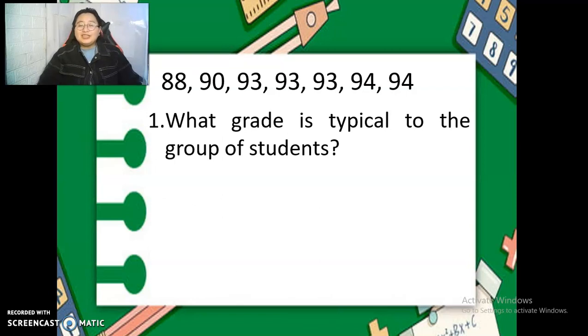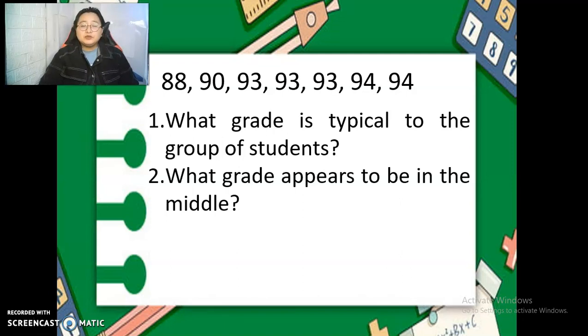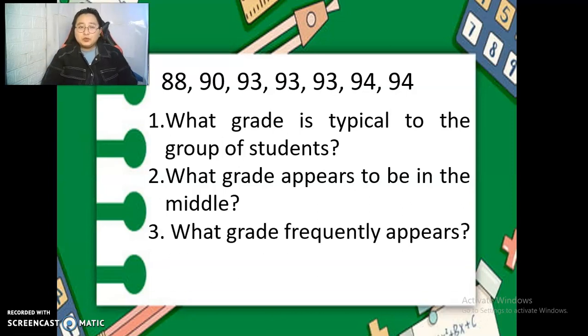You all have just to follow or copy the numbers, and then number your one-fourth sheet of paper one to three because we're going to answer three easy questions. First question, what grade is typical to the group of students? When I say typical, the usual, the common. You have to get the average. Number two, what grades appear to be in the middle?